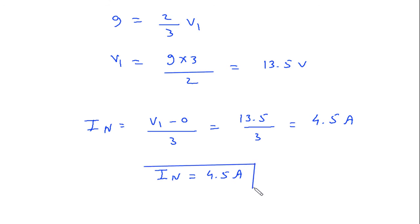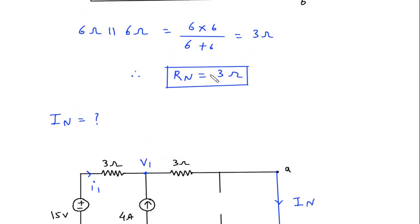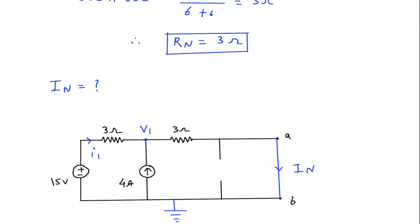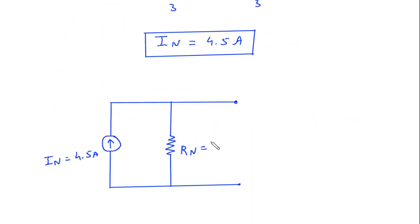Now we have the value of In and Rn, so from this we can draw the Norton equivalent circuit. This will be In, In is equal to 4.5 ampere. And this will be Rn, Rn is equal to 3 ohm.